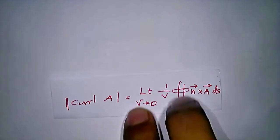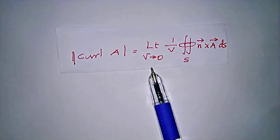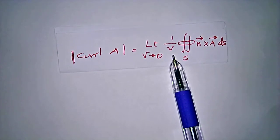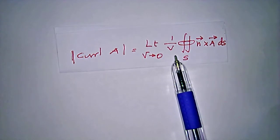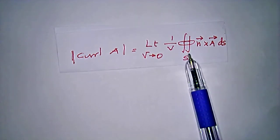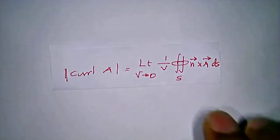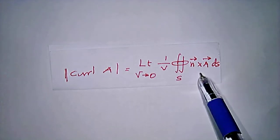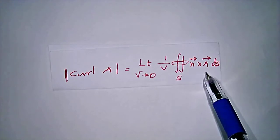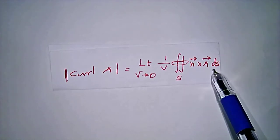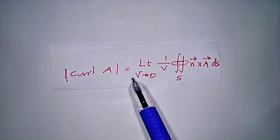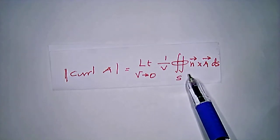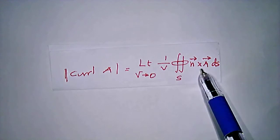So the modulus of curl A is equal to the limit as V tends to 0 of 1 by V times the double closed surface integral of n-vector cross A-vector dS.